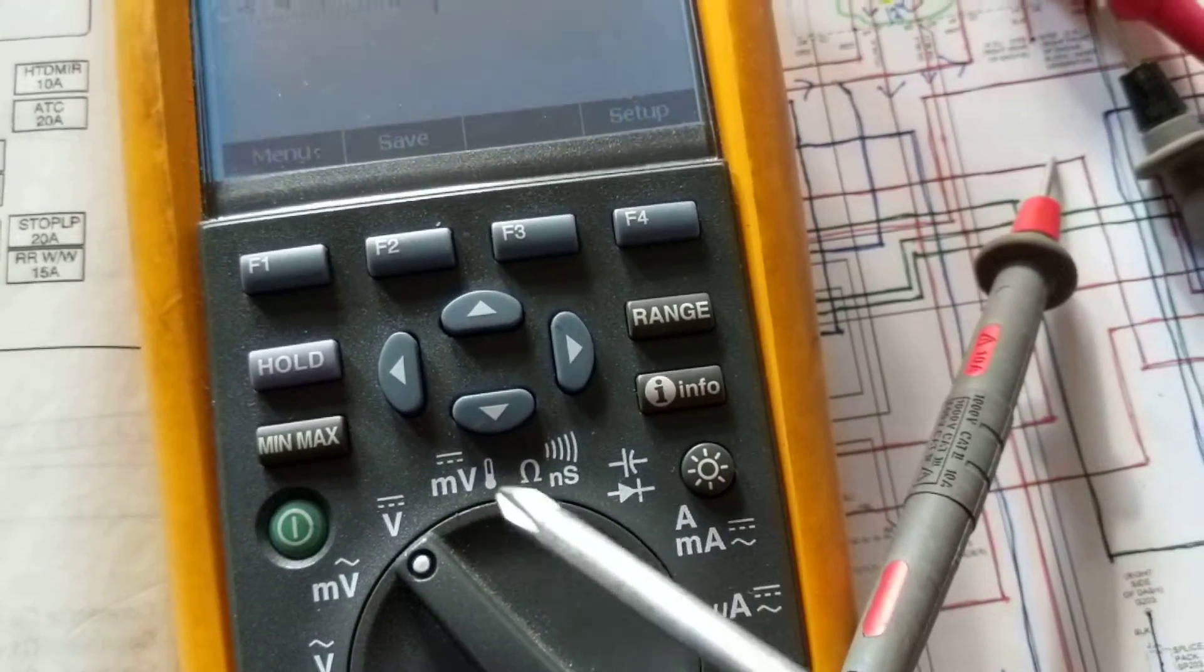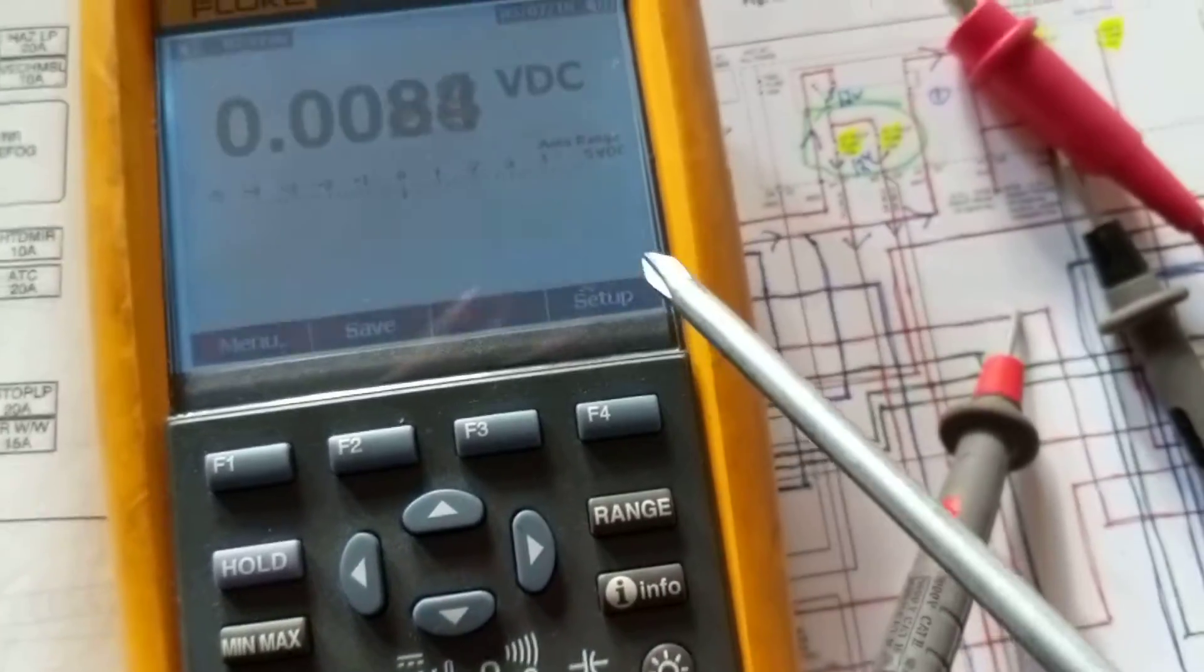You don't have to select the proper range: 20, 200, 2000. This auto range does it for you. That's the great feature about digital multimeters.